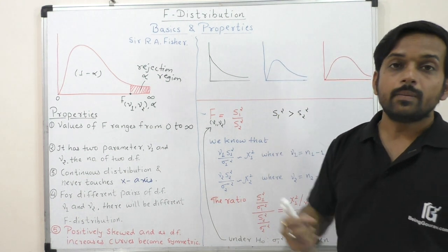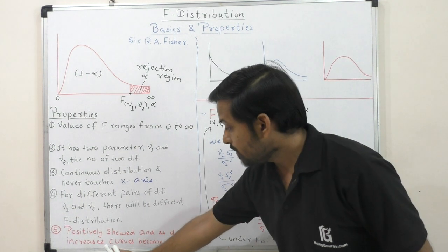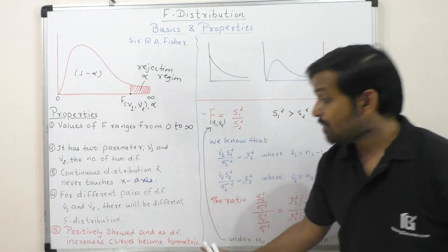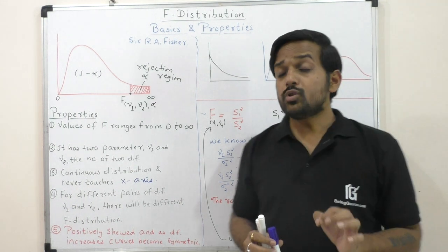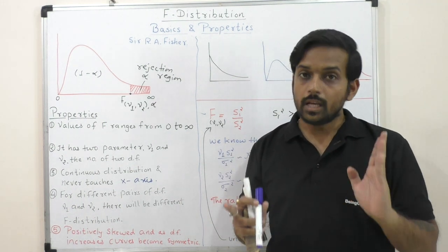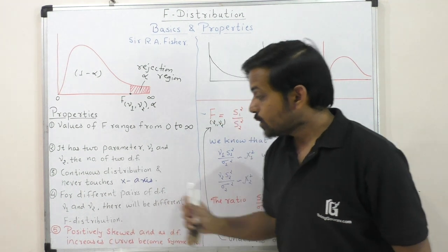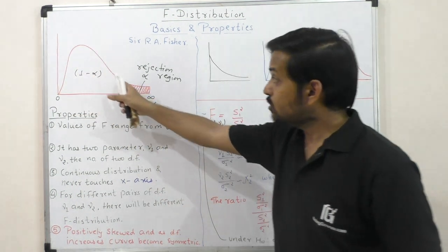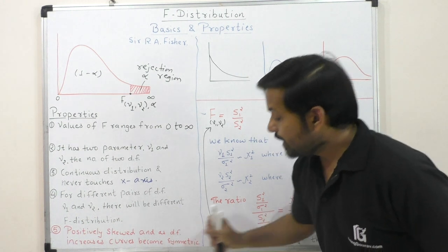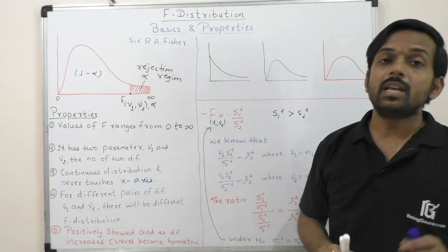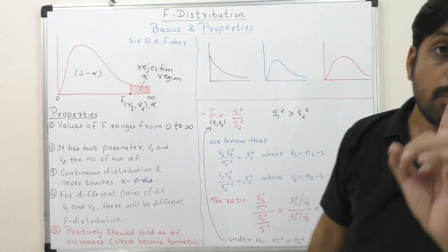The next property is that F distribution is positively skewed. The reason for positive skewness is that F distribution is based on variance, and variance cannot be negative, so F values start from 0. This is why the F distribution always has a right tail curve. However, as we increase the degrees of freedom, the curve becomes more symmetric. F distribution is also unimodal, meaning it has a single mode.